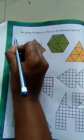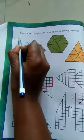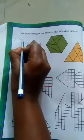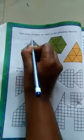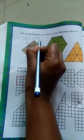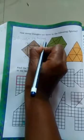Okay. In the first figure, there are twelve triangles. Okay.